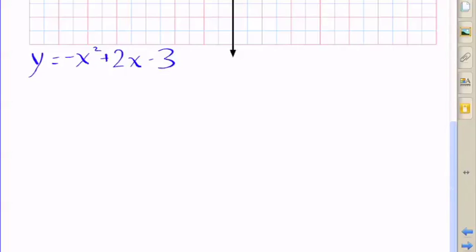As you can see, I'm rewriting the quadratic function. And if you look closely, it's y equals negative x squared. So negative 1 is the a coefficient of x squared. So our graph will open downward.